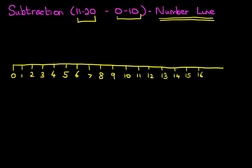15, 16, 17, 18, okay, we've just got enough space, 19, 20. So that is our number line, and our number line is from 0 to 20.